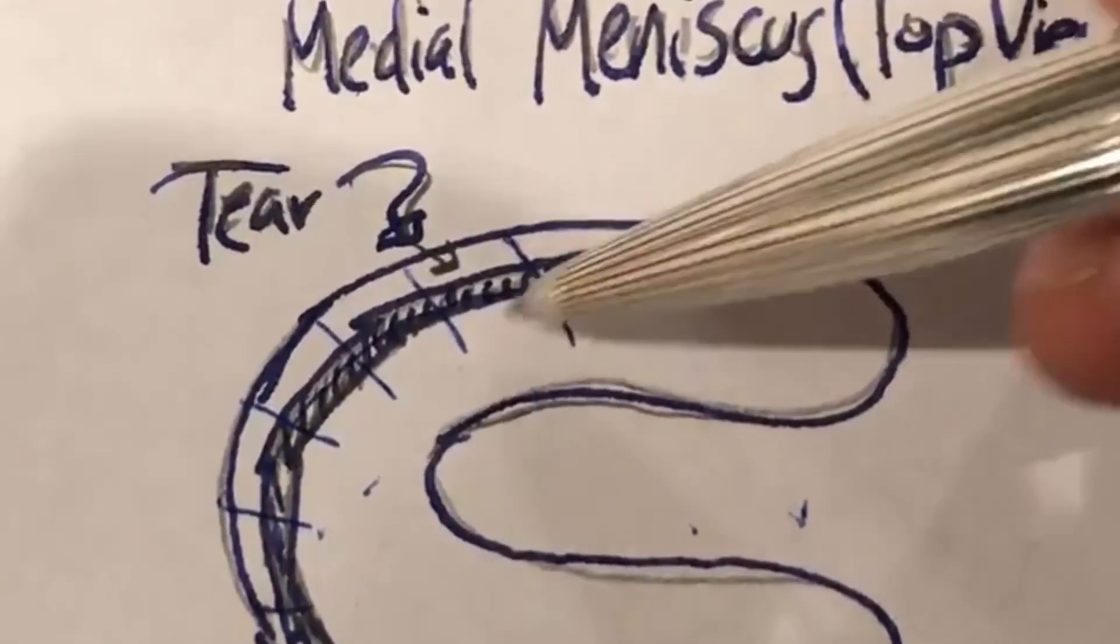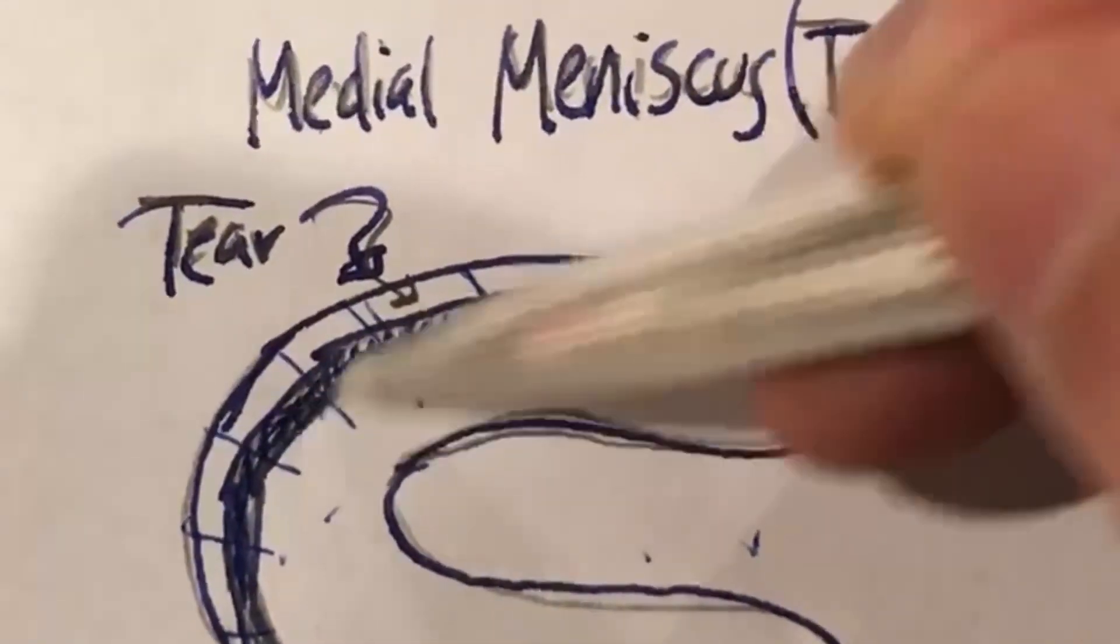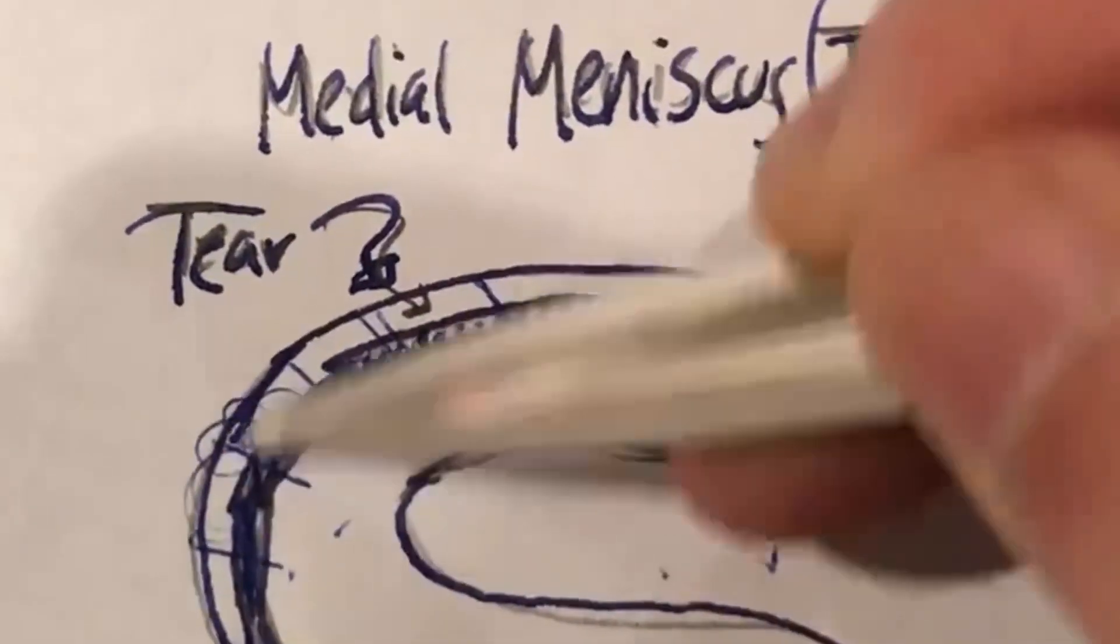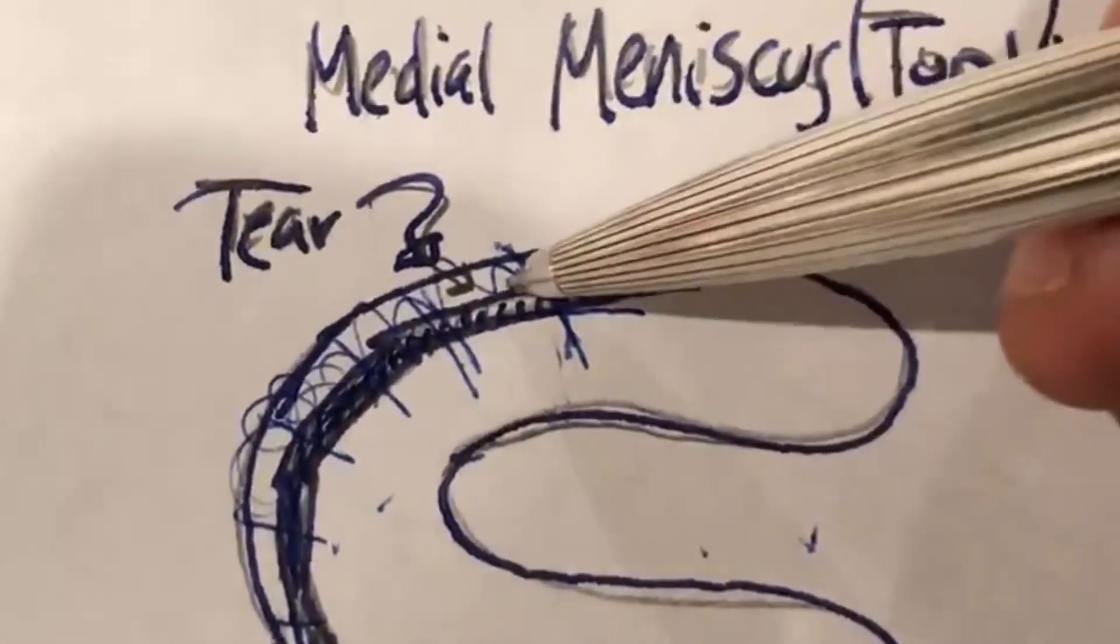So what's done is sutures are placed. Prior to suturing, this gap is roughened up, bleeding is created, sutures are placed and tightened, and the gap is compressed.